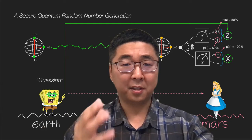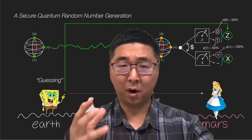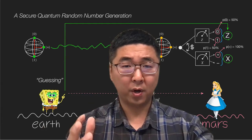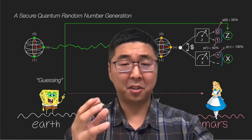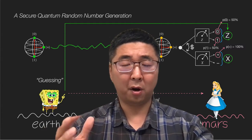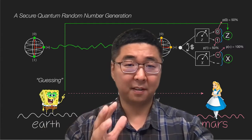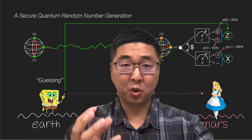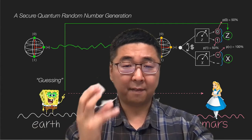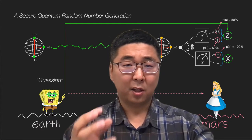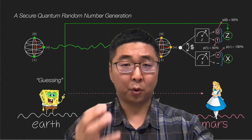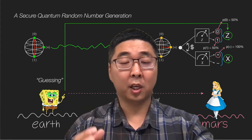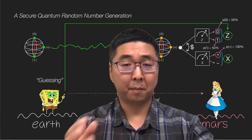If uncertainty on one measurement is very low, then uncertainty on another measurement is very high. By using this fact, the QRNG protocol can generate a secure random number.